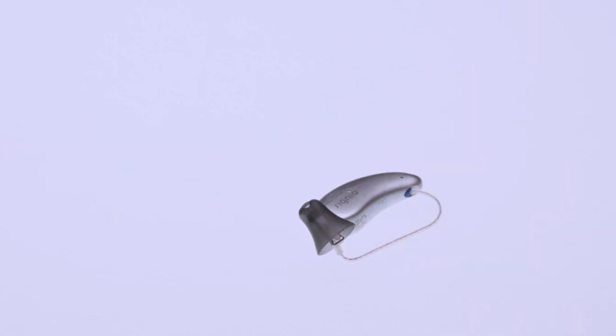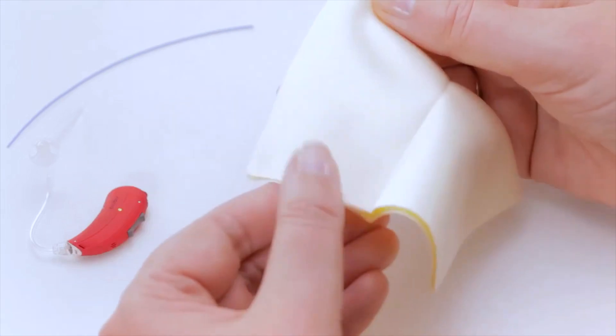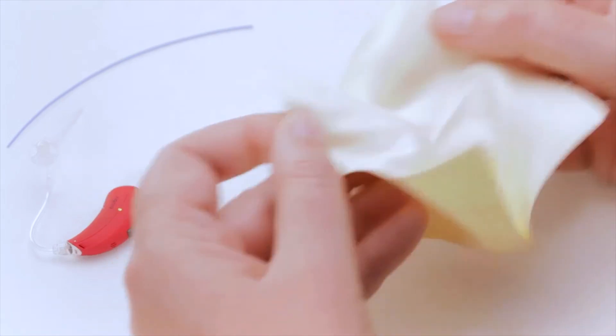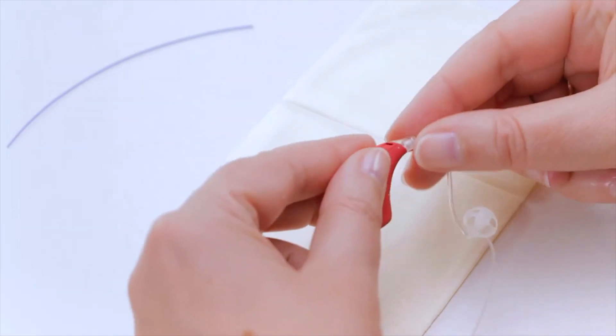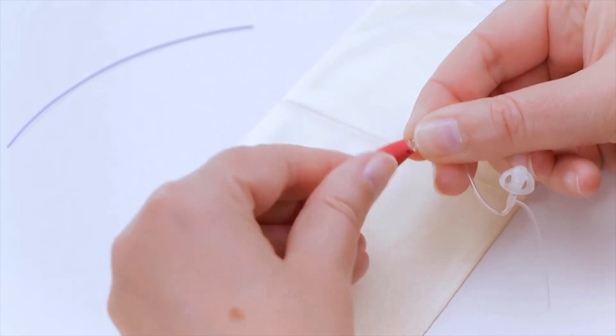Now, if you have a BTE hearing aid where the receiver is contained within the hearing aid shell, the thin tubing between the hearing aid shell and dome may become plugged with debris. In order to clean the tubing, first unscrew the tubing from the hearing aid shell.